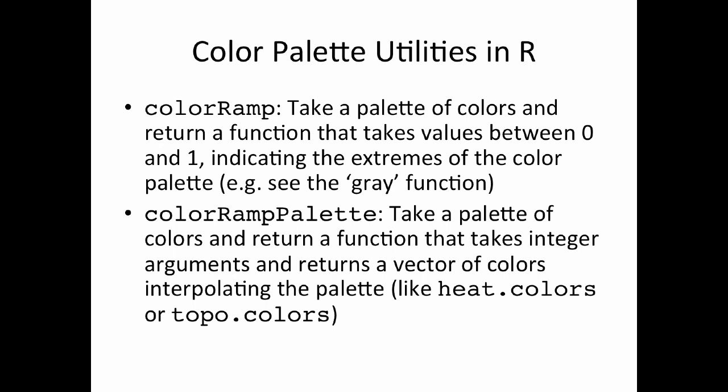The colorRamp function specifically takes a palette of colors and returns another function. That returned function takes values between 0 and 1 indicating the extremes of the color palette. A similar function already in R is the gray() function, which interpolates between black and white. colorRamp is a generalization — it takes any set of colors and gives back a function that takes numbers between 0 and 1 and interpolates between the extremes of the palette.